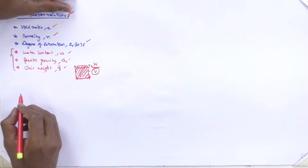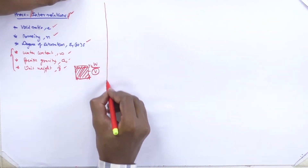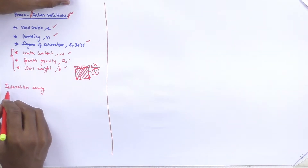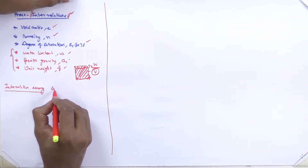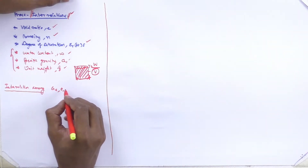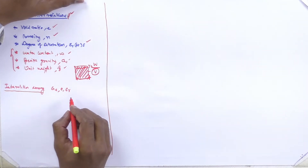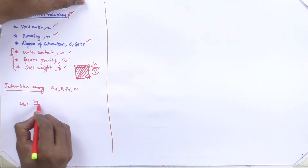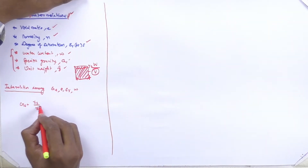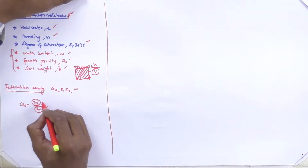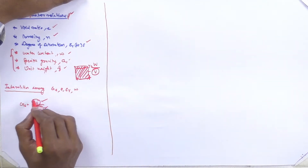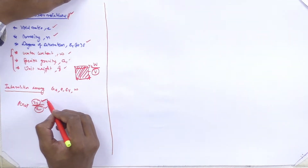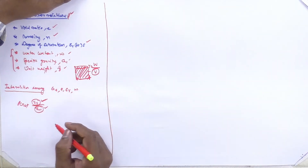Now we start the first interrelationship among specific gravity, void ratio, degree of saturation, and water content. As you know, specific gravity Gs is defined as γs divided by γw — the unit weight of solids compared to unit weight of water. For sand it may be around 2.65, and for clay it may be greater than 2.65.